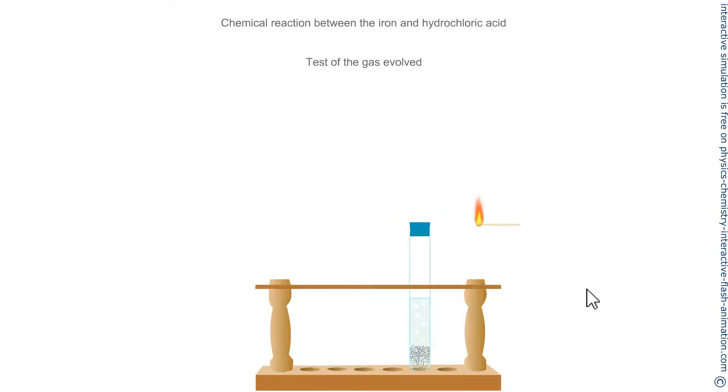The reaction itself. Look here. The iron, the steel wool, was brought into contact with hydrochloric acid. A green tint appears and when approaching a flame there is a small detonation.